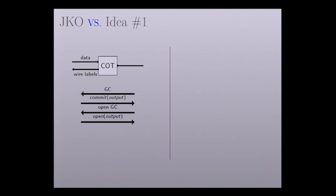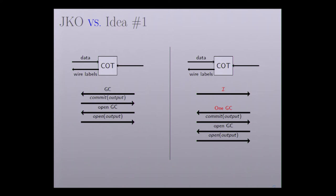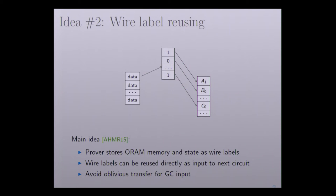In our improved JKO protocol, before the verifier generates the circuit, the prover computes the access pattern I and sends it to the verifier. Based on this access pattern, the verifier generates one big circuit that performs all computations. For improvement number two, we adopt the idea from AMHR 2015 of reusing wire labels. The main idea is that the prover stores the ORAM memory and the state as wire labels, so these wire labels can be reused directly as input to the next circuit, avoiding the oblivious transfer for the garbled circuit input.